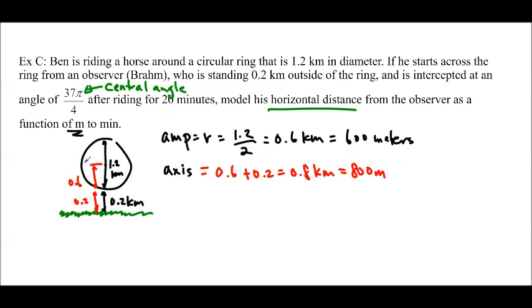So that's the axis. And then we're going to have to find his period. Because we know he starts at the furthest most point from Brahm. So that tells us that we're using positive cos and that we have a phase shift of 0, right? Because we're starting at the maximum. So let's find the period. The period is going to be, again, the time for one revolution.